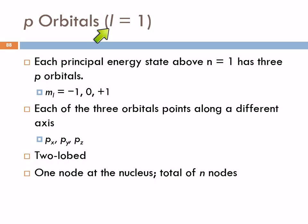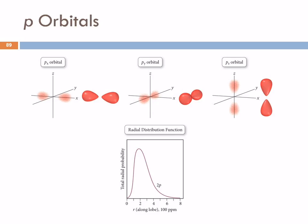The next quantum number, l — l equals 1 — is the p orbital. m sub l has values from minus l to plus l, so there are three different p orbitals, and their difference is orientation in space. They're oriented along a different axis: p along the x-axis, the y-axis, and the z-axis. These have two lobes, and so they look a lot more like a standing wave. They have one node at the nucleus, and then depending on the principal energy level, they will also have other nodes.